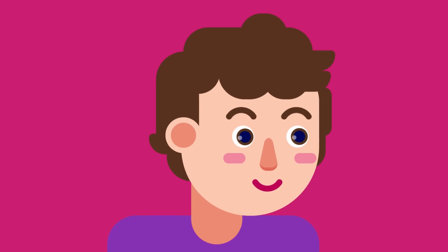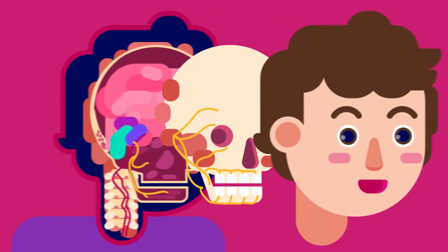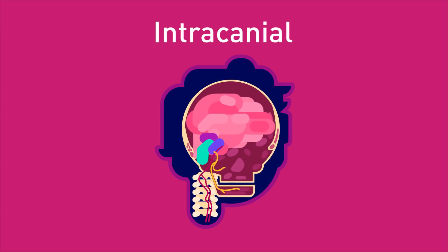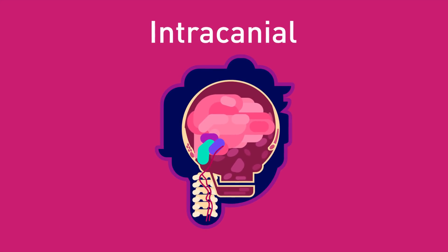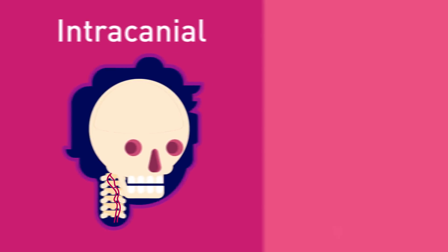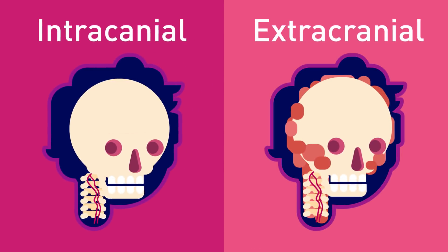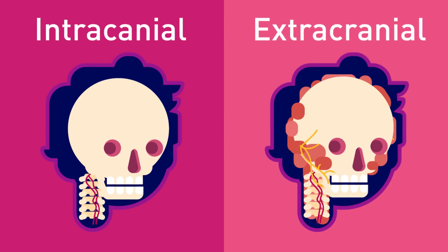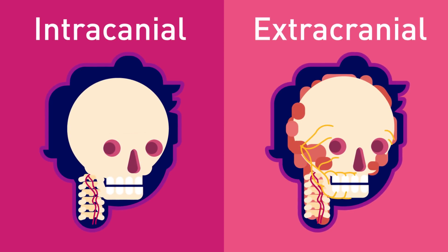The course of the facial nerve can be divided into two parts: intracranial, the course of the nerve through the cranial cavity and the cranium itself, and extracranial, the course of the nerve outside the cranium through the face and neck.